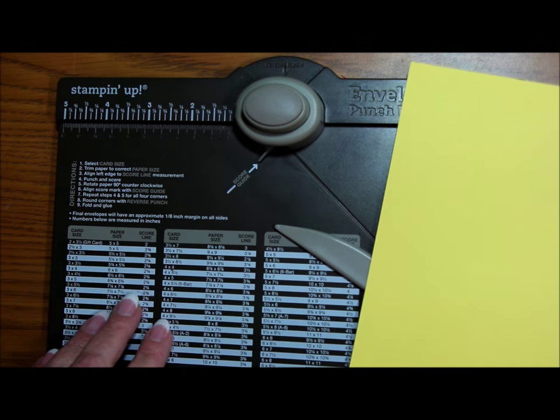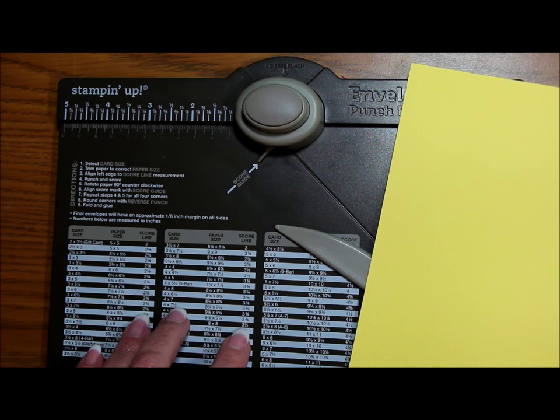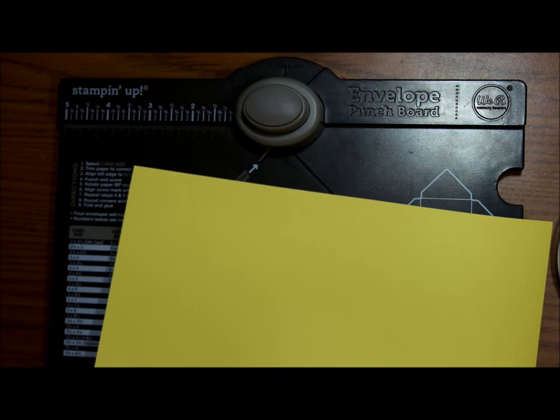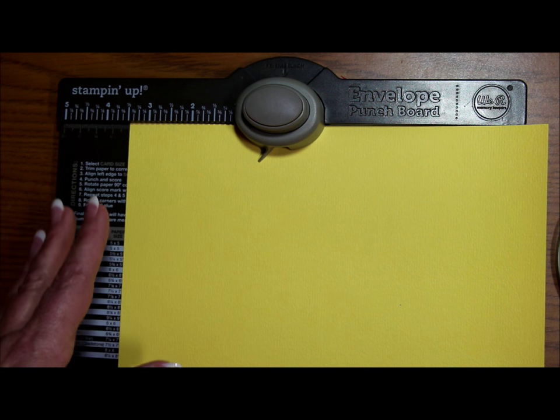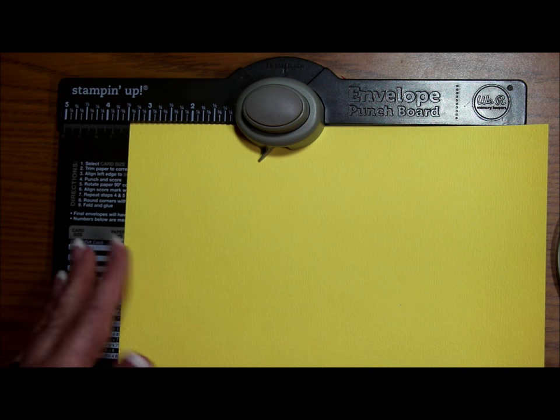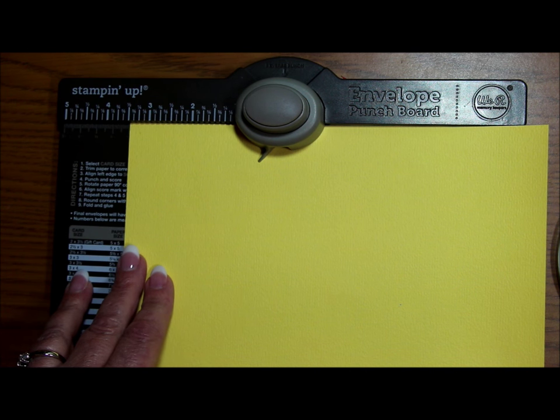Now it tells me that for a four and a quarter by five and a half inch card that I need to make my first score line at three and a half inches, but I need to add an eighth of an inch. So you're going to need to do a little fractions here, three and a half is the same as three and four eighths, exactly the same, and I'm going to add one more eighth. So I'm going to go to three and five eighths.